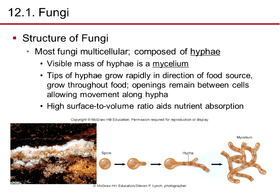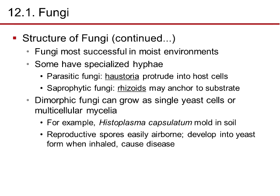The structure of most fungi is multicellular, composed of hyphae. The visible mass of hyphae is called mycelium. The tip of the hyphae grows rapidly toward the food source, creating openings between cells that allow movement along the hyphae. A high surface-to-volume ratio aids in nutrient absorption. Some fungi have specialized hyphae: parasitic fungi called haustoria protrude into host cells, while saprophytic rhizoids may anchor to the substrate. Dimorphic fungi can grow as single yeast cells or multicellular mycelia — for example, Histoplasma capsulatum mold in soil.